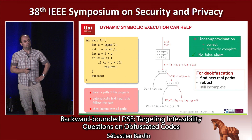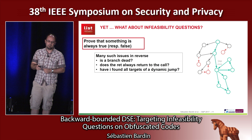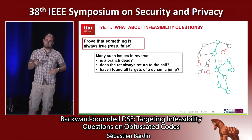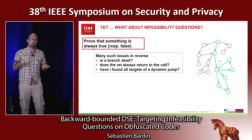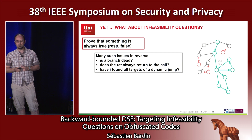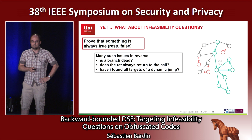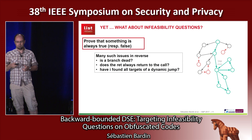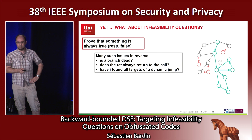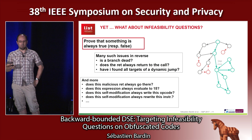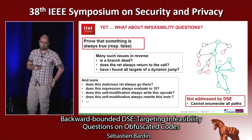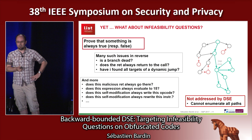Is it the end of the story? Not exactly, because dynamic symbolic execution can only prove that something is feasible — it can take this jump target, take this branch, and so on. But in reverse engineering, in many situations, you want to answer infeasibility questions. If your dynamic analysis didn't manage to go to a particular branch, you would like to prove that the branch is indeed infeasible — that it is an opaque predicate. Or that a return instruction will always go back to its correct return site. Or that for a dynamic jump, you have found all the targets. But dynamic symbolic execution, by definition, cannot answer these questions because it would require enumerating all paths, which is infeasible.